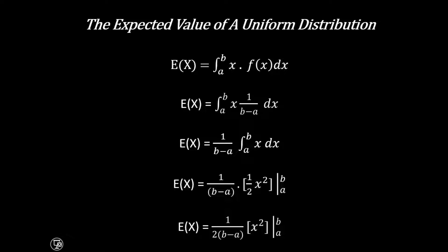Now from this point we substitute the upper limit for x minus the lower limit for x. We should not forget that this is raised to power 2, and therefore the whole expression gives us b raised to power 2 minus a raised to power 2.